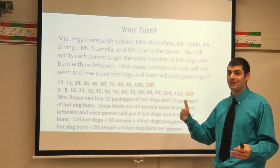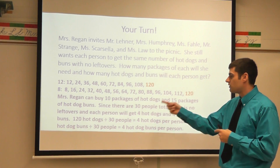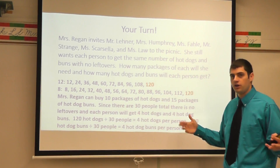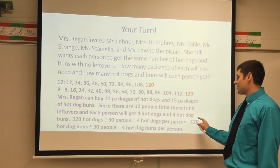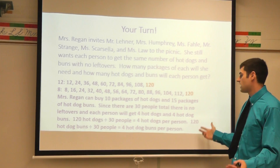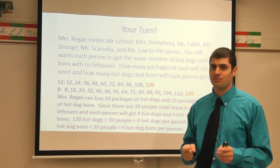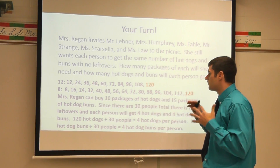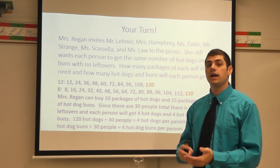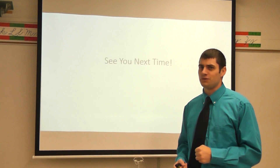Here's the proof: 120 hot dogs divided by 30 people gives you 4 hot dogs per person. Then 120 hot dog buns divided by 30 people gives you 4 hot dog buns per person — no leftovers, each person gets four of each. I hope you brought your appetite to this picnic! This shows how you can use common multiples in a real-life situation. Maybe we'll do a sixth grade picnic and use this to plan our own hot dog barbecue. Thanks for tuning in — we'll see you next time.